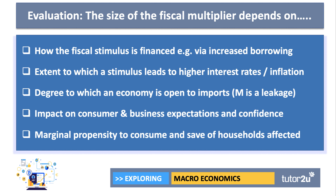The second point is the extent to which a stimulus actually leads to higher interest rates and perhaps higher inflation. If the government is borrowing more to fund infrastructure spending, does that increase the cost of market interest rates in the bond market? Does that lead to increased costs of borrowing for firms and businesses, which could dampen the effect of the multiplier? Does it lead to an increase in inflation, which would reduce the real incomes of households and again reduce the size of the multiplier effect?